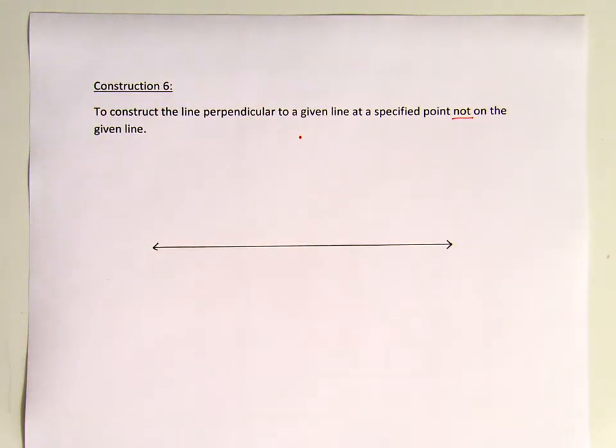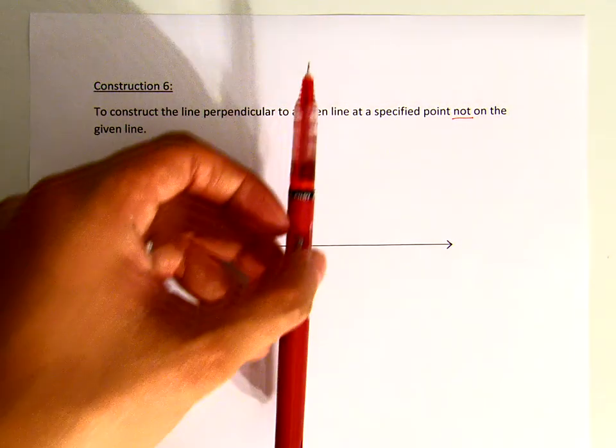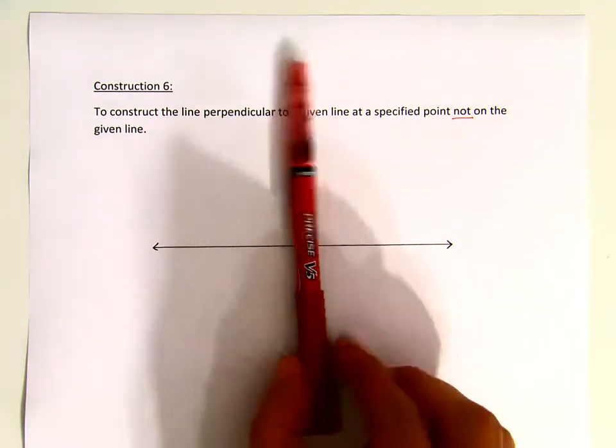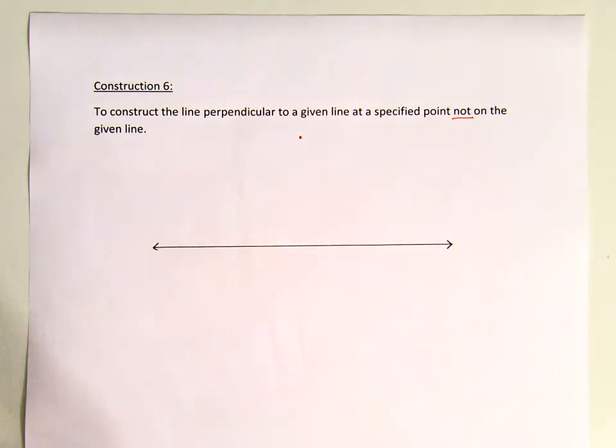We want to construct a line perpendicular to this line, passing through that point. So we expect the line will look something like that.